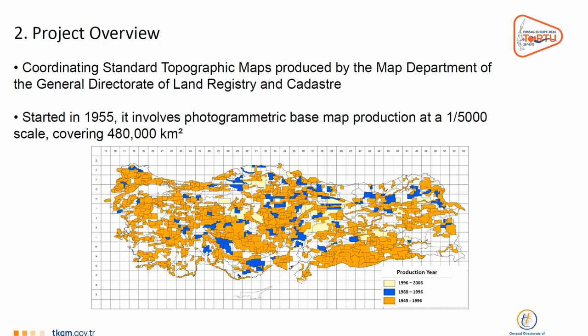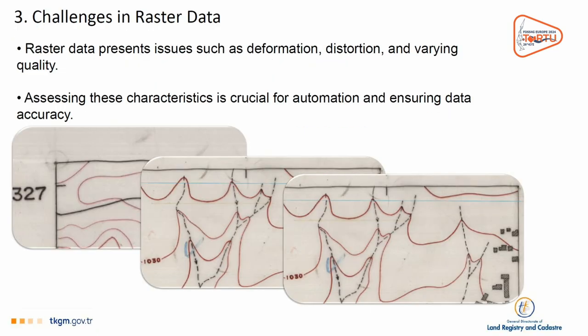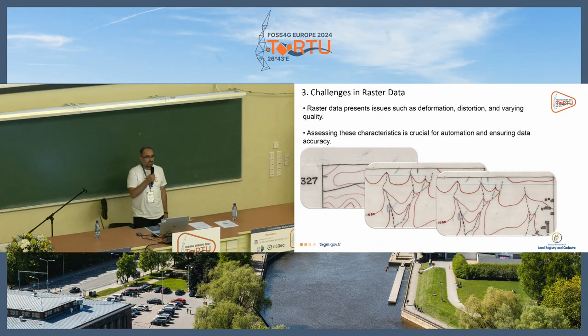It involves photogrammetric-based map production at 1:5,000 scale, covering 480,000 square kilometers. When we create raster data, we face some challenges — raster data presents issues such as deformation, distortion, and varying quality.